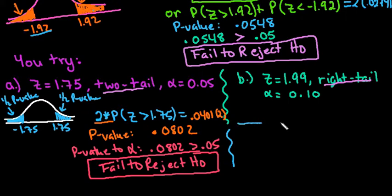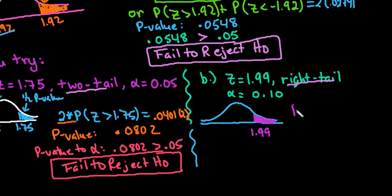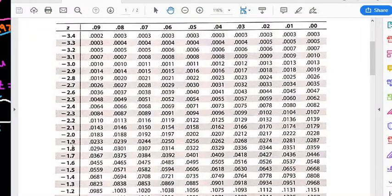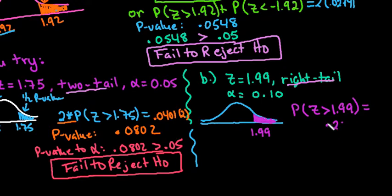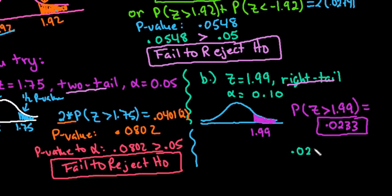For the last one, Z = 1.99 and it's a right-tail test, so we shade the right tail. The p-value is P(Z > 1.99). Using the shortcut, I go to negative 1.99 in the table and get 0.0233. Comparing p-value to alpha: 0.0233 is less than 0.10, so the conclusion is to reject the null hypothesis.